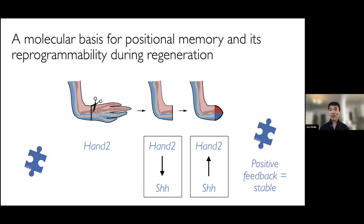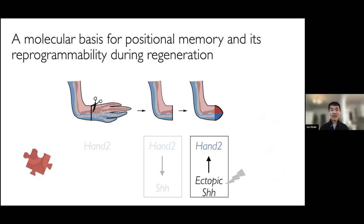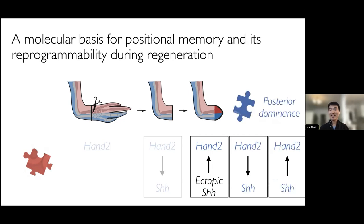We also think that the same feedback loop can explain the reprogrammability of positional memory. If we take an anterior red puzzle piece cell — which does not normally express HAND2 and therefore does not usually express sonic hedgehog — but in the context of the blastema, if we apply an ectopic source of sonic hedgehog either directly or through the transplantation assay by placing it near sonic hedgehog-expressing cells, these red puzzle pieces can readily induce expression of HAND2 and become blue puzzle pieces. Because of that positive feedback architecture, this posterior state is then stably retained. We've essentially decoupled positional identity from embryonic development.